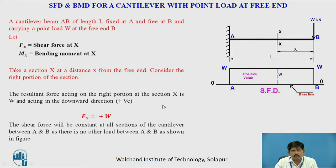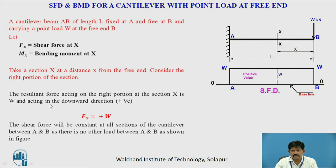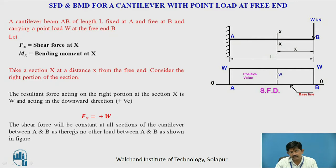We will now consider a cantilever beam with a point load at its free end. Here there is a beam AB of length L with a point load W at its free end. Let Fx be the shear force and Mx be the bending moment at any section XX, considered at a distance x from the free end. The resultant force acting on the right portion of the section is W acting downward, which is positive as per the sign convention. The shear force will be constant at all sections of the cantilever between A and B as there is no load between them, so it is represented as a horizontal line. This is the shear force diagram for a cantilever with a point load at the free end.